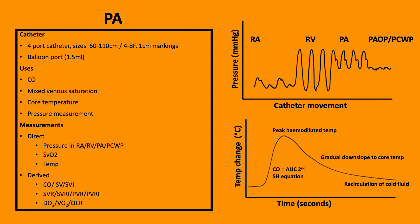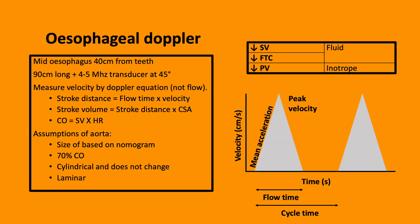The Stewart-Hamilton equation then uses the area under the curve, the AUC, to determine the cardiac output. The esophageal Doppler enables monitoring of aortic blood flow. It's a quick and simple technique. It's inserted to the mid-esophagus, which is approximately 40 centimeters from the teeth. The probe itself is 90 centimeters long and contains a transducer which is 45 degrees angulated.